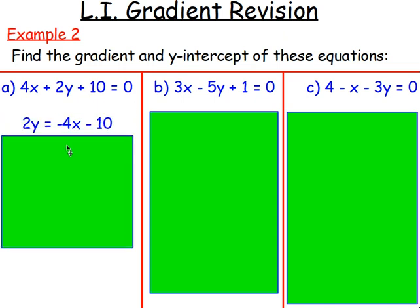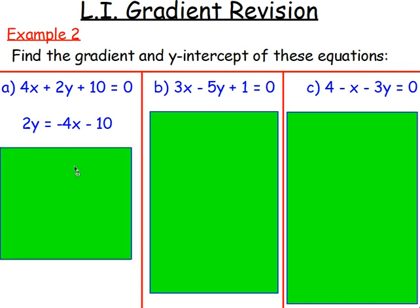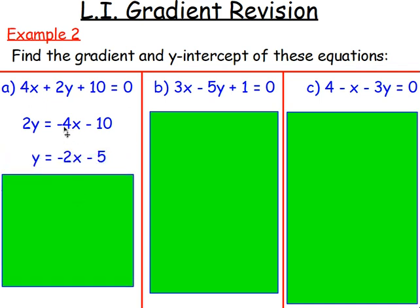So I've got 2y equals negative 4x take away 10. I still want y equals, not 2y, so I have to get rid of the times by 2 — divide every single term by 2. Negative 4 divided by 2 is negative 2, and negative 10 divided by 2 is negative 5. I've now got it in the form y equals, so I can read off the gradient and y-intercept.